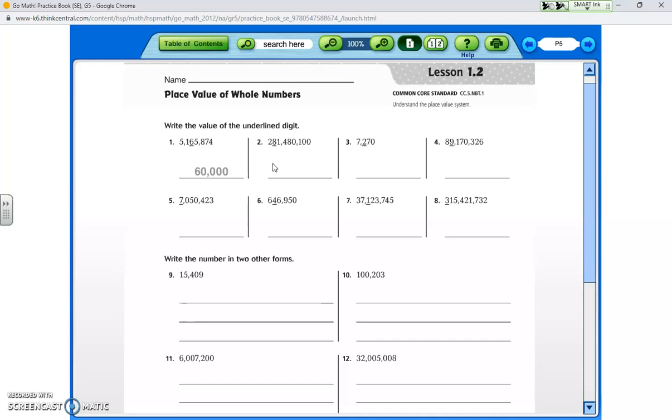Number two, we have 281,480,100. And the 8 is underlined. The 8 is in the ten millions column. So we need to put seven 0s behind it in order to keep it in that column. So everything else behind it becomes a 0. Everything in front disappears. What are your questions? Do we have any questions on this? No. Okay. So that's how you're going to continue to do the problems all the way up to number 8.